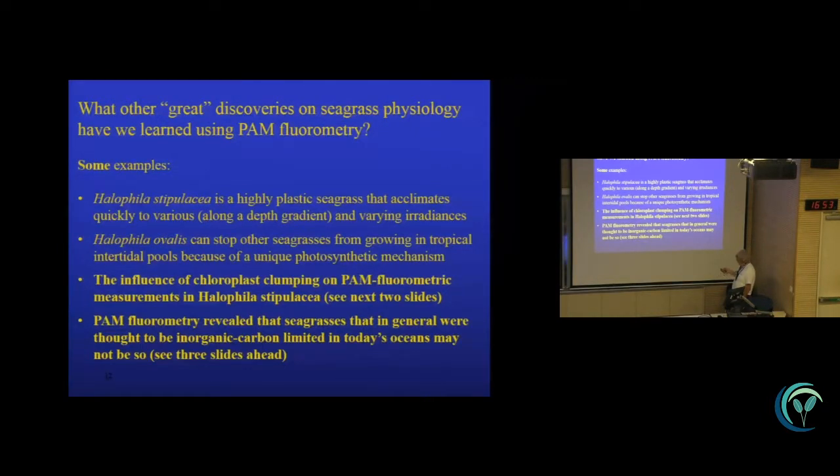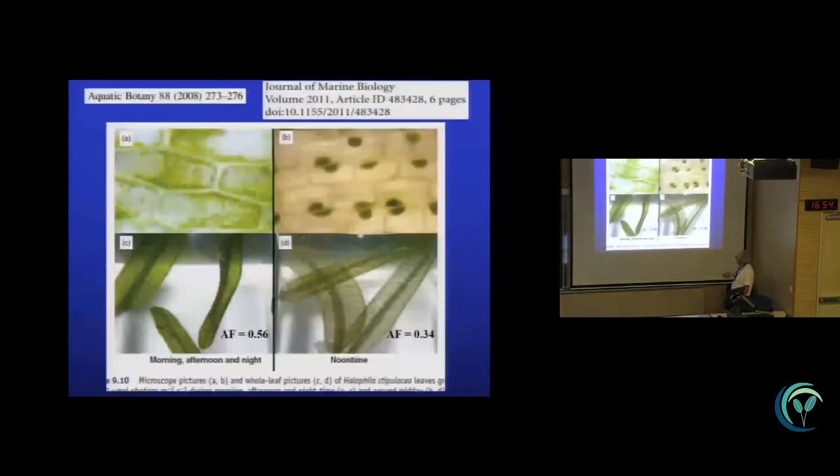What else have we learned during these 20 years of using the PAM fluorometer? I'll focus on two of them. The influence of chloroplast clumping on these absorption factors, and another one that I'll come to in one slide ahead. So, Halophila stipulacea, just like other Halophilas, we'll hear from Pimshanok in a while, what they do is they clump together chloroplasts at very high light, and this is some kind of protection from high light, while in dim light, like in the morning and the afternoon, or at depth, they spread the chloroplasts out, so they become much darker when the chloroplasts are spread out, and when they're clumped together, light goes through and they look much paler.